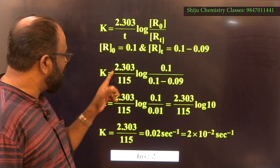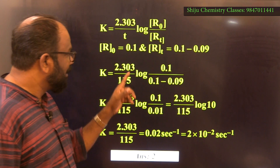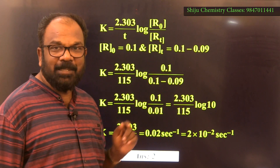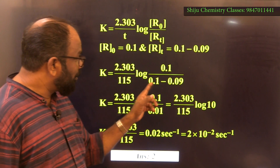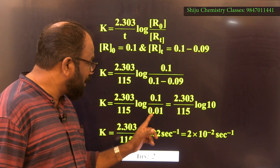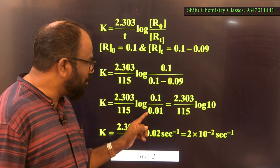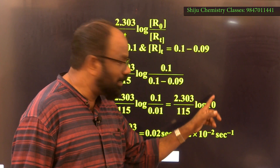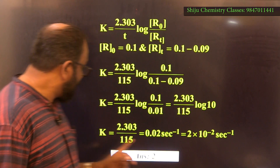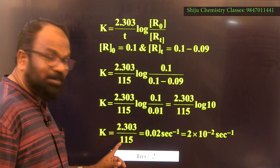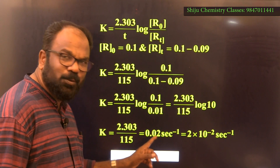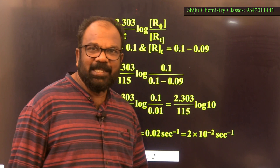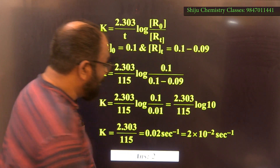Substituting: k = (2.303 / 115) × log(0.1 / (0.1 − 0.09)) = (2.303 / 115) × log(0.1 / 0.01) = (2.303 / 115) × log 10. Since log 10 = 1, k = 2.303 / 115 = 0.02 s⁻¹ = 2 × 10⁻² s⁻¹. The integer answer is 2.